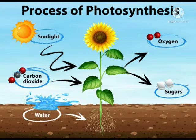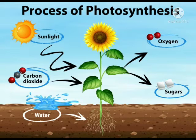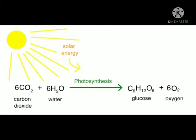The third topic is the Process of Photosynthesis. Photosynthesis is a process used by plants and other organisms to convert light energy into chemical energy, which through cellular respiration can later be released to fuel the organism's metabolic activity. The overall equation of photosynthesis is: carbon dioxide plus water plus solar energy yields glucose plus oxygen.